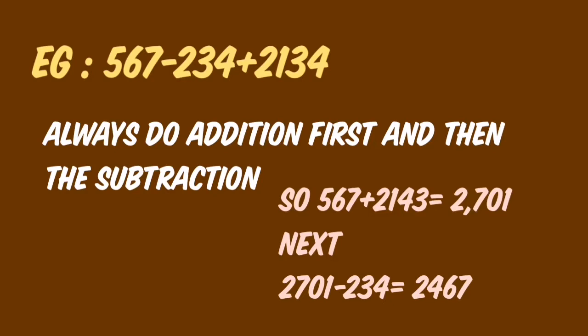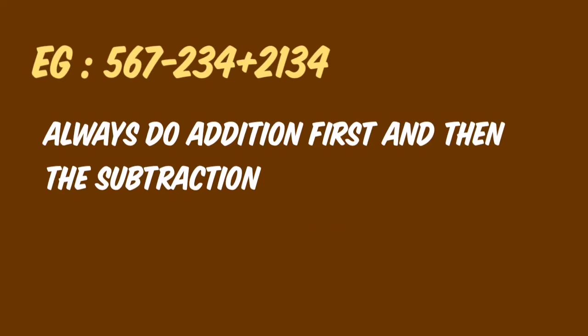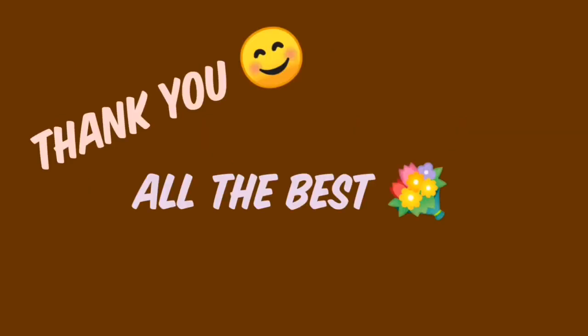When a question like this is given, we should always do the addition first. So 567 plus 2134 equals 2701. Then we do the subtraction: 2701 minus 234 equals 2467. Always do the addition first, then the subtraction. Thank you, and all the best!